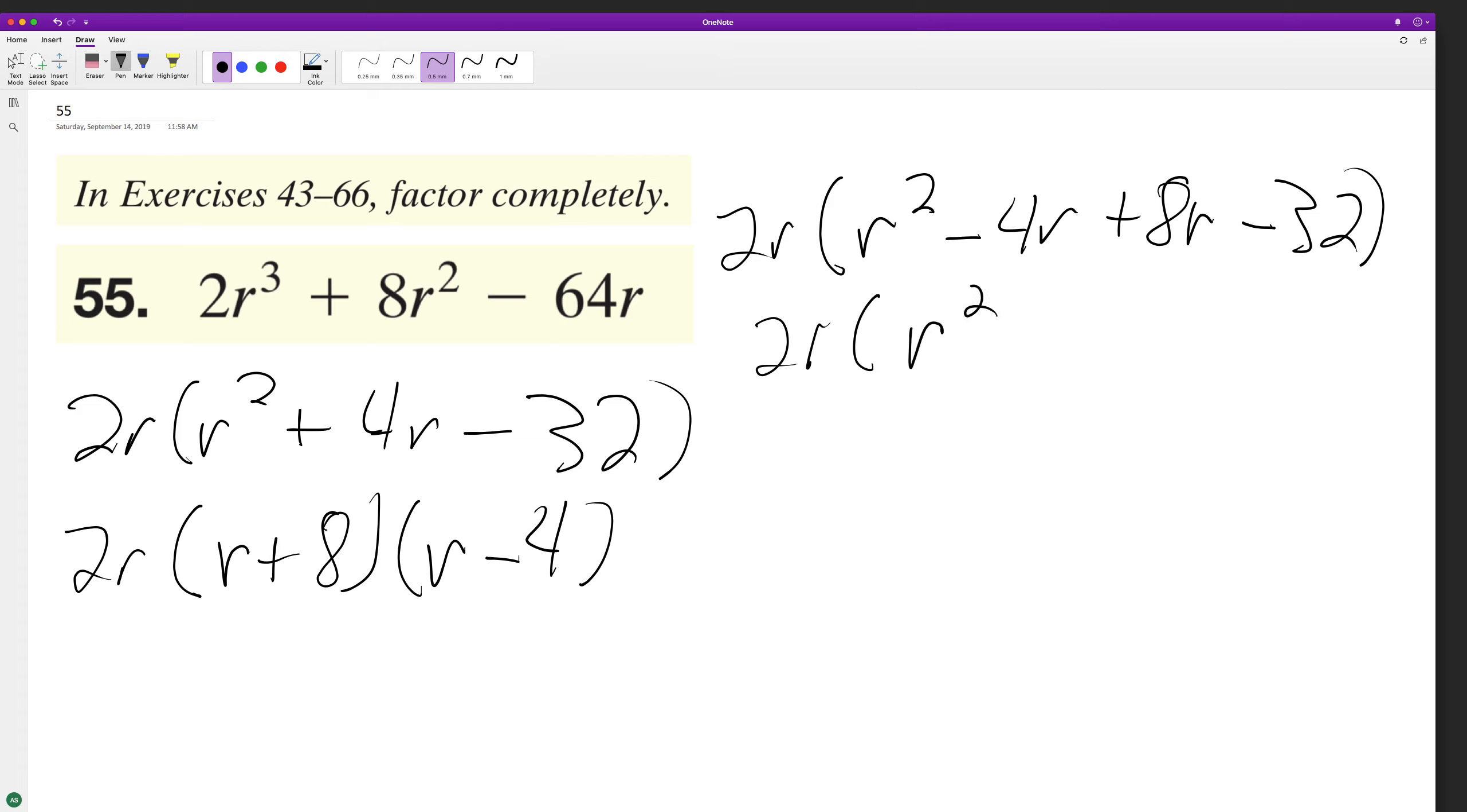2r, r² + 4r - 64. What am I doing? It's still minus 32. I've got to distribute the 2r.